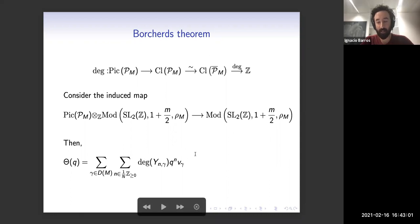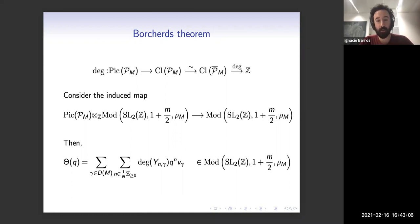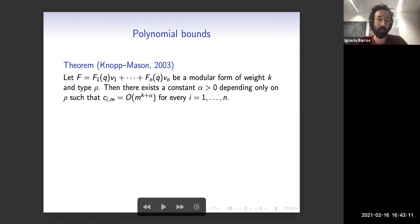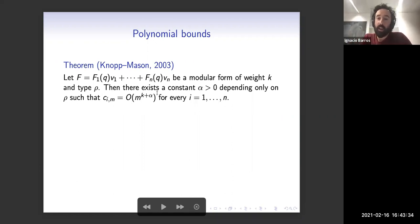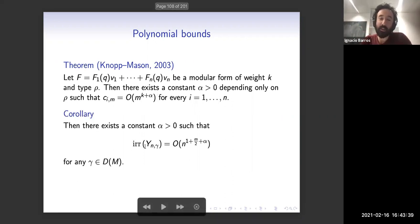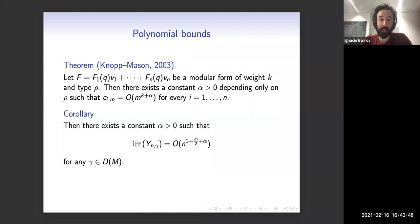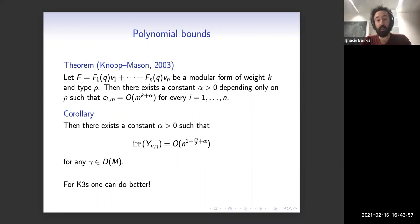At this point, by a theorem of Knopp-Mason: if you have a vector-valued modular form and take its Fourier expansion, the coefficients cannot grow more than polynomially. The degree of the polynomial is the weight plus alpha, where alpha depends on the representation. For us, this immediately gives that the degree of irrationality of these divisors is polynomially bounded. But we can do much better for K3s: one can exploit the fact that the representation is explicit, then study eigenvalues and eigenspaces, and bring this down to a scalar-valued modular form where the bounds on growth are better.